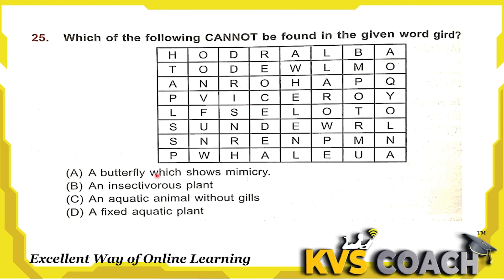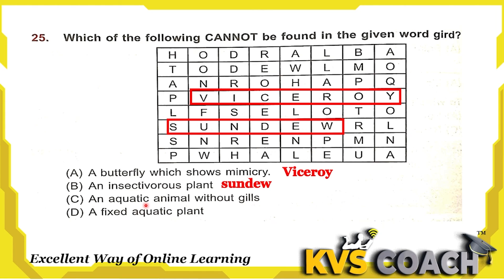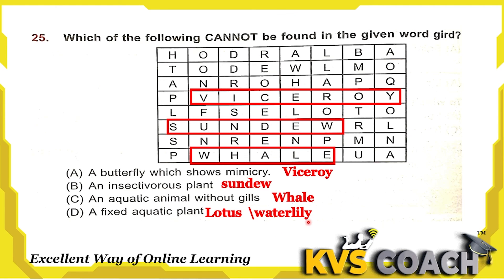Next question: which of the following cannot be found in the given word grid? Option A — a butterfly that shows mimicry — this is the viceroy butterfly, and V-I-C-E-R-O-Y can be found in the grid. Option B — an insectivorous plant — sundew is an insectivorous plant and can be found. Option C — an aquatic animal without gills — dolphin and whales are examples; whale (W-H-A-L-E) is found in the grid. Option D — a fixed aquatic plant such as lotus or water lily — these cannot be found in the grid. So the answer is option D.